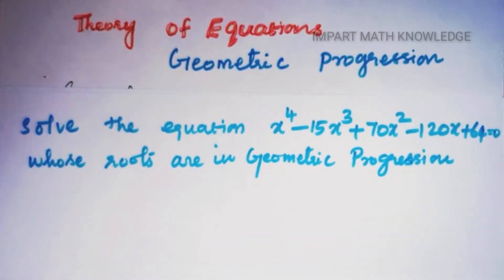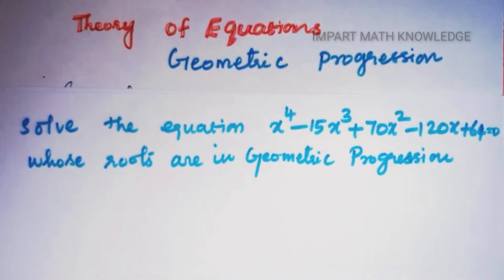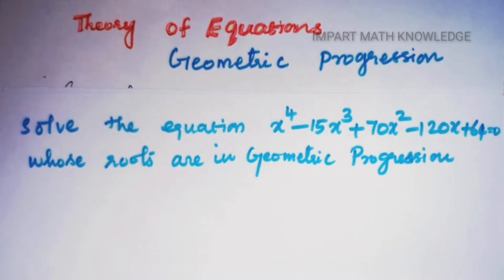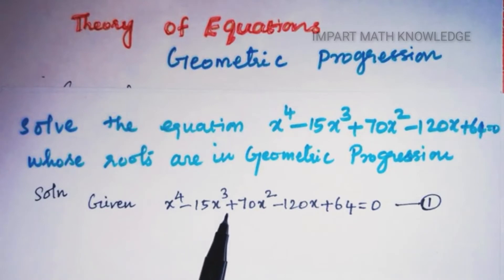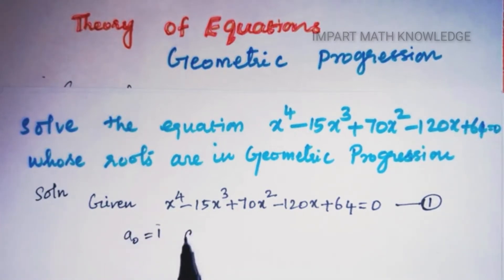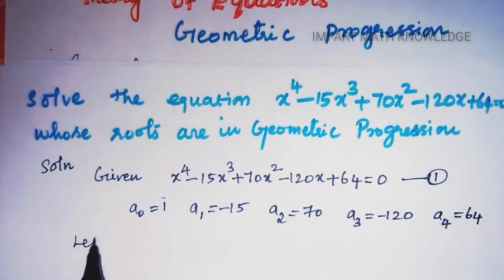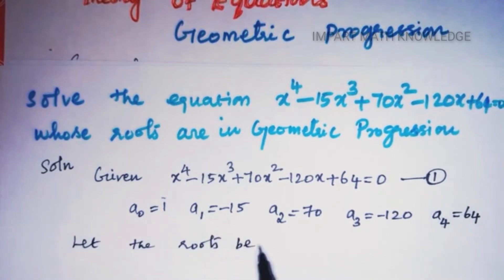Next problem: solve x⁴ − 15x³ + 70x² − 120x + 64 = 0, whose roots are in geometric progression. This is a fourth-degree equation with 4 roots. For GP, the roots are of the form a/r, a, ar, ar². Here a0 = 1, a1 = −15, a2 = 70, a3 = −120, a4 = 64.